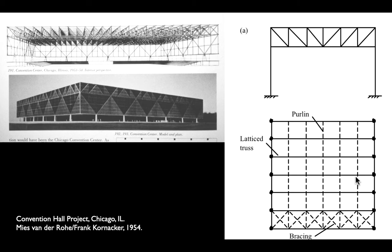On the right is maybe a more famous one — Mies van der Rohe's proposal, never built, for a convention center in Chicago. That convention center is interesting because it's one of the cleanest examples of a space frame from the mid-century and shows the real benefits. This was a proposal for about a 200-foot span with maybe a 15-foot deep space frame on top, with trusses running in two directions. You can see lattice trusses and purlins cross-braced in both directions so they work as a space frame.